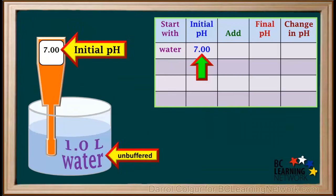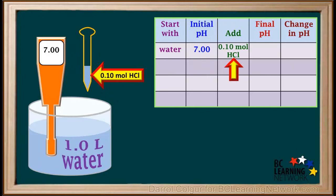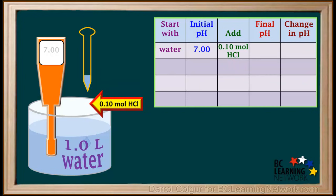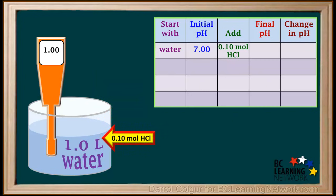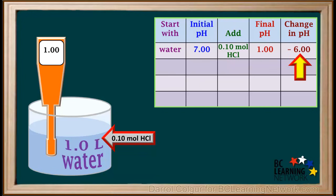To get an idea of what a buffer solution does, we'll start with 1 liter of pure water. Water is unbuffered and it has an initial pH of 7. Now we'll add 0.1 mol of strong acid HCl to the water. The final pH is 1. The pH went from 7 all the way down to 1, so it has decreased by 6 whole units.